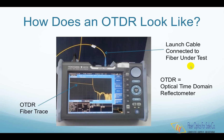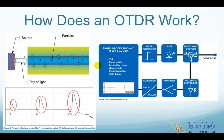An OTDR provides a view of the fiber link by reading the level of light that is reflected back from the fiber under test. There are actually two types of light being reflected back. The first type is a constant low-level reflection created by the fiber called Rayleigh backscattering, which comes from the natural reflection and absorption of impurities inside optical fiber.